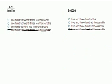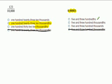Let's try this one: one hundred and twenty-three ten-thousandths. We know that it has to have ten-thousandths at the end. This one has ten-thousandths, and so does this one. So we're looking for one hundred and twenty-three — it's this one. The next one says five and three hundred-thousandths. We need the one that ends in hundred-thousandths, and we only see one with hundred-thousandths. So it must be five and three hundred-thousandths.